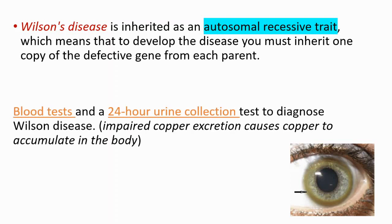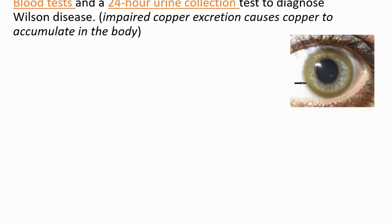In order to diagnose Wilson disease, we are using two tests generally. Those are blood tests and 24-hour urine collection. 24-hour urine collection is so important because, remember, impaired copper excretion is causing this disease. So we will look at the levels of copper in the urine.